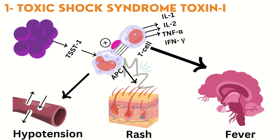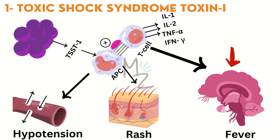These cytokines act on the skin causing rash and inflammation, making the skin red. They also increase capillary permeability, leading to hypotension (low blood pressure). They also act on the hypothalamus to increase prostaglandin production, leading to fever. Hypotension, rash, and fever — these three combine to form Toxic Shock Syndrome.